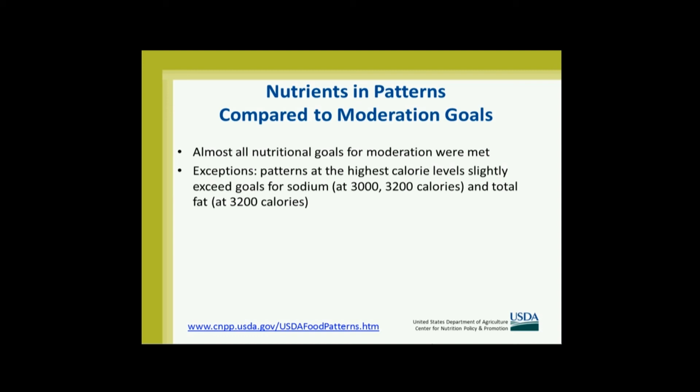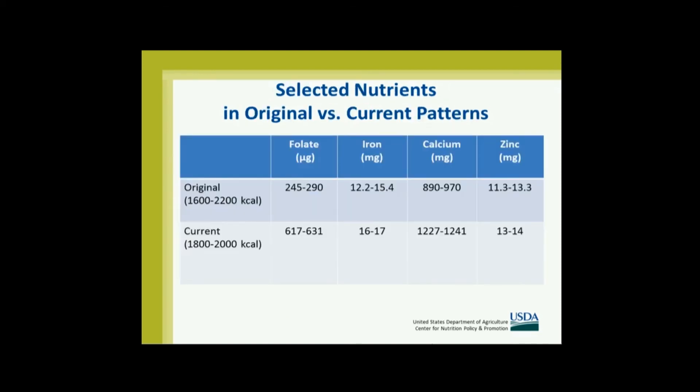Although this is not really the main point of the talk, I do want to note that we have moderation goals, and in almost every case we meet those. Those moderation goals are for saturated fat, sodium, and total fat within the AMDR. At the very highest levels we do go over for sodium and for total fat, and a lot of that is due to some things we do with the 3,200 calorie pattern, where nutrient needs are pretty much met and we give a lot of extra calories — counting half of those as solid fat.